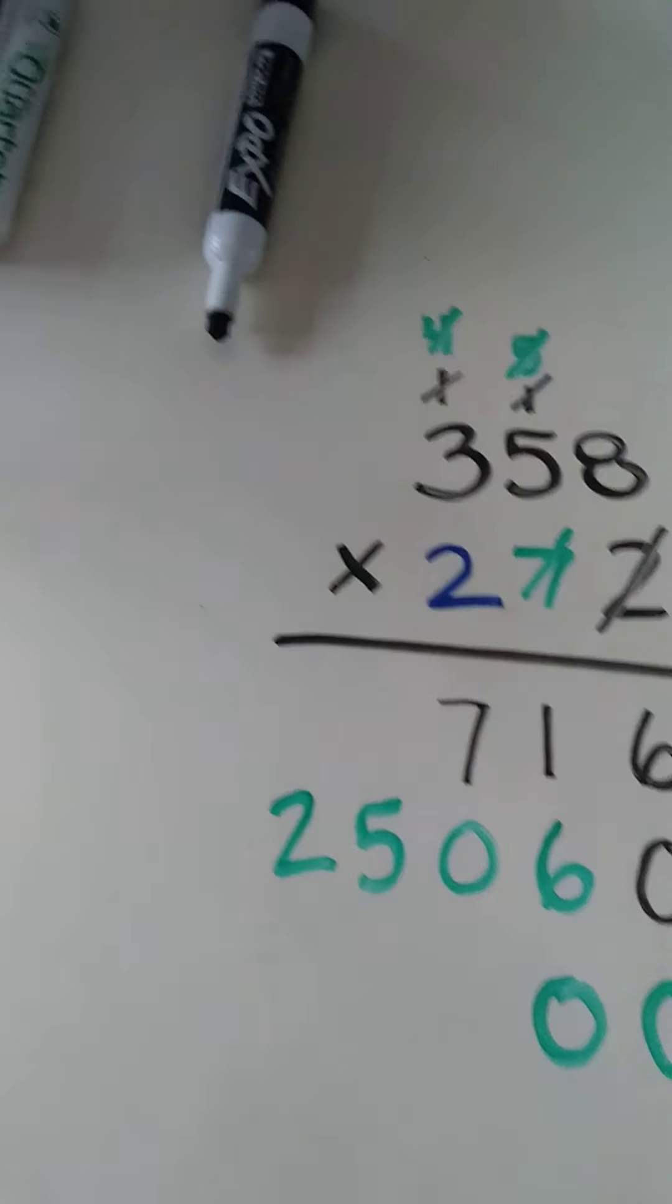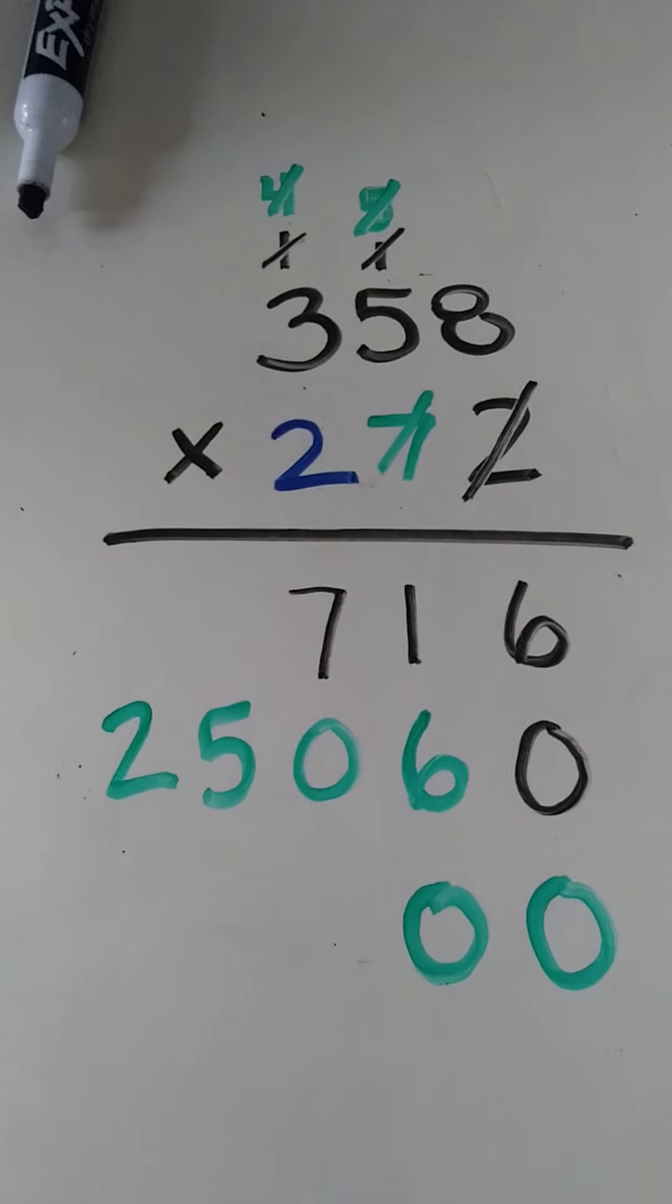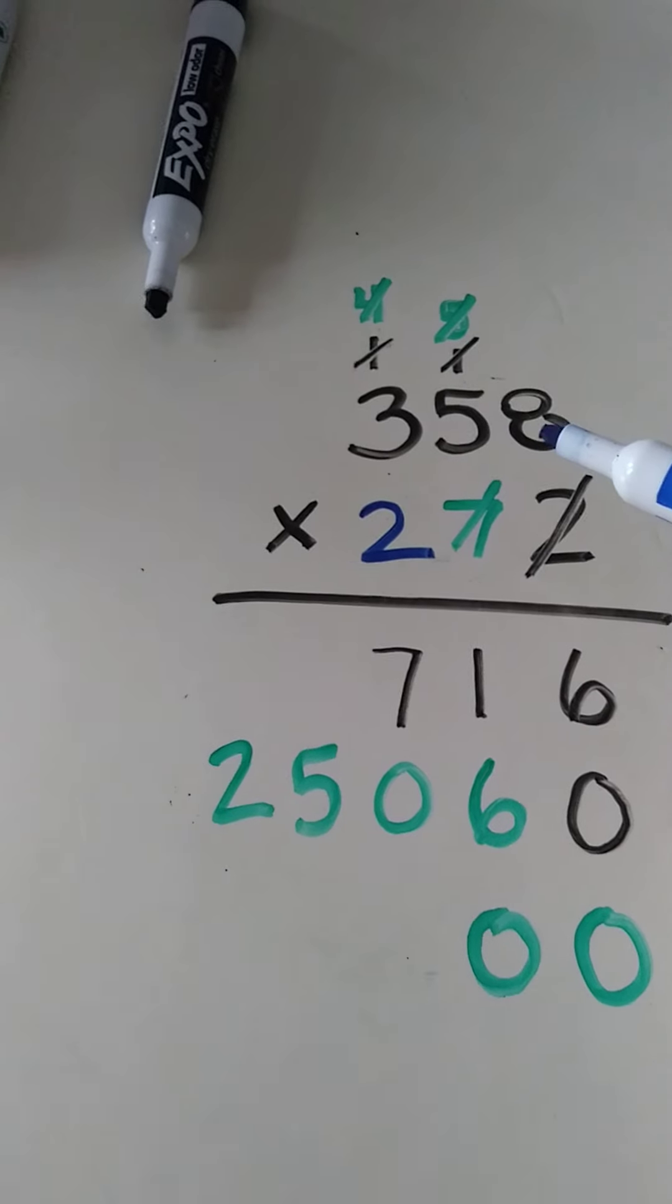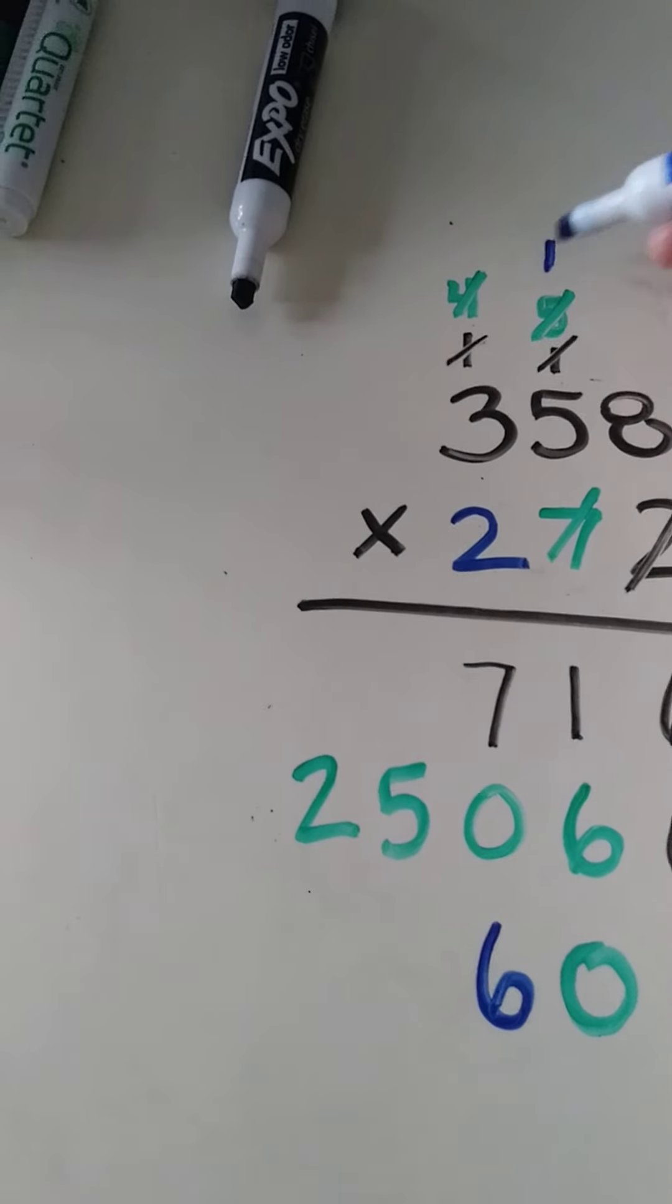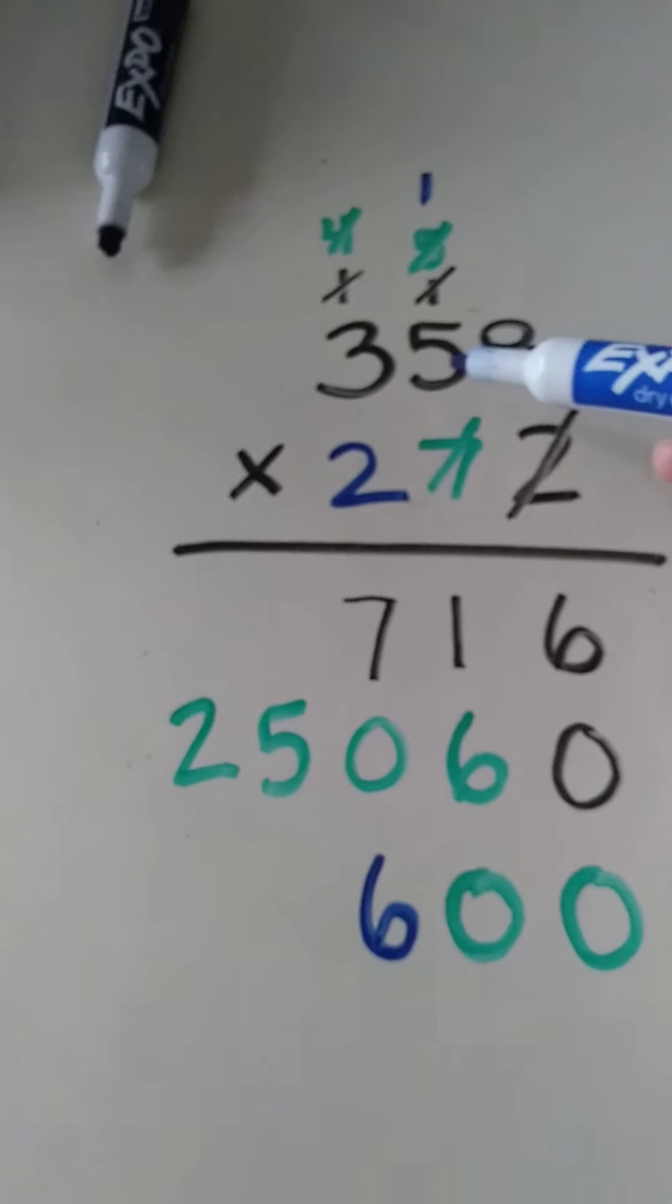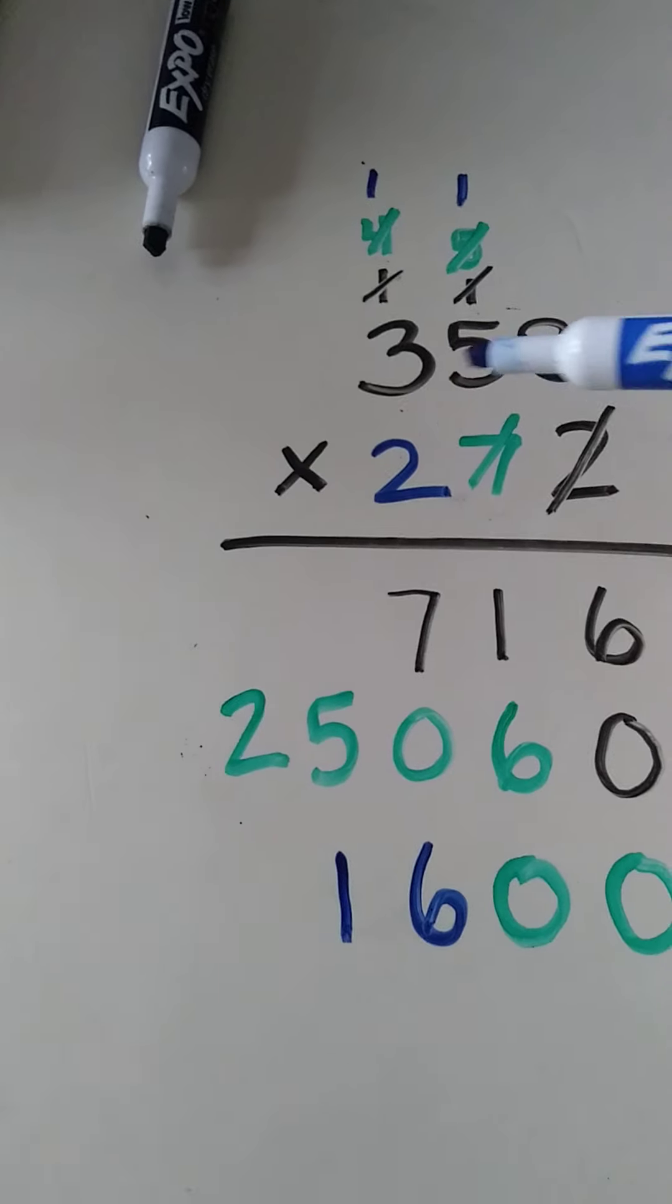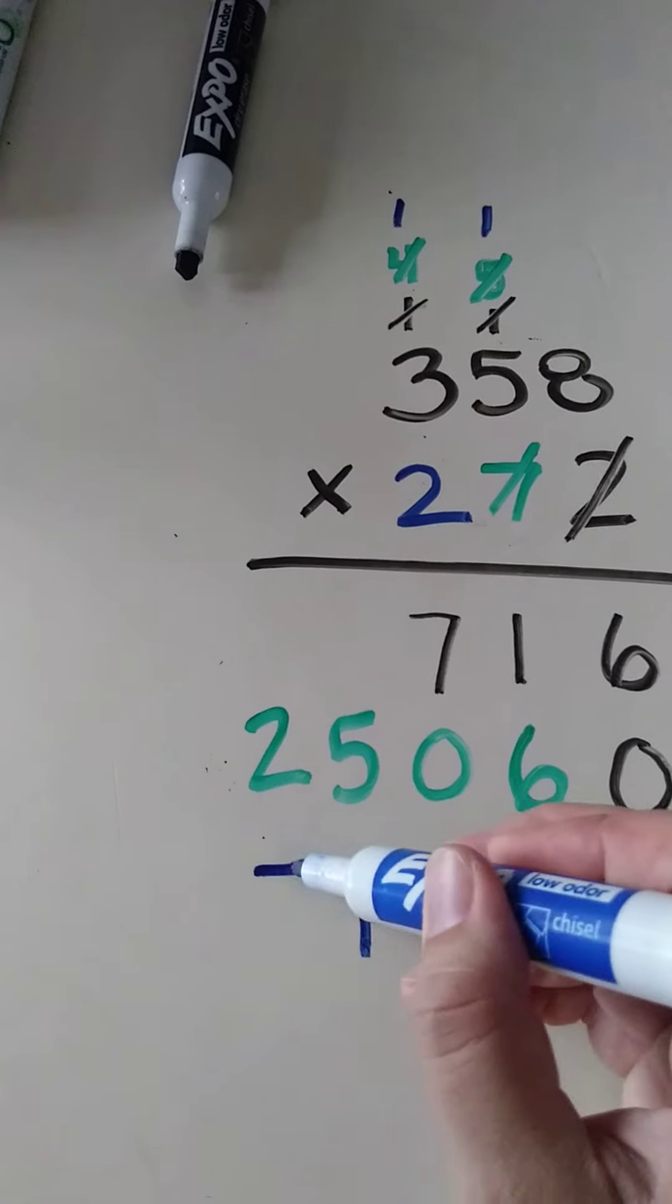Okay, so I'm going to change colors again to show that we're working with the hundreds. Now you, of course, don't have to change colors, just to get the point across of the video. So we're going to do the same thing. Here we go again: 2 times 8 is 16, so put my 6 down here, my 1 up here, 16. And then we're going to do 2 times 5, which is 10, plus 1 is 11. And then 2 times 3, which is 6, plus 1 is 7.